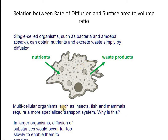On the other hand, multicellular organisms such as mammals, insects, and fish require a more specialized transport system. We have a blood circulatory system, a digestive system, and an excretory system. These transport systems are important because in a larger organism, the diffusion rate is so slow that it cannot let the organism survive on simple diffusion alone. We are made up of trillions of cells, and not all the cells are exposed to the external environment — our surface area to volume ratio is very low compared to that of a single-celled organism.